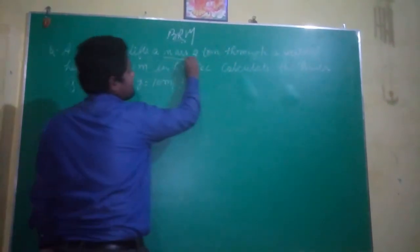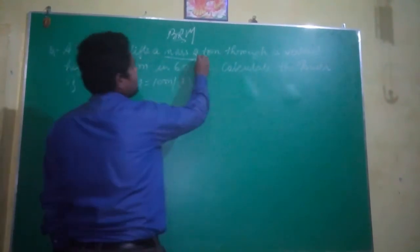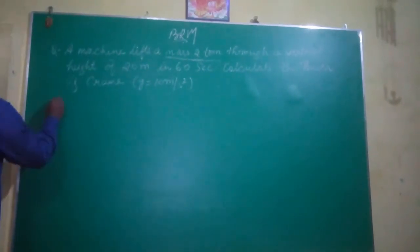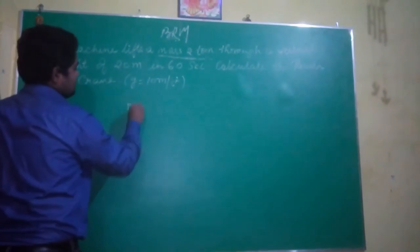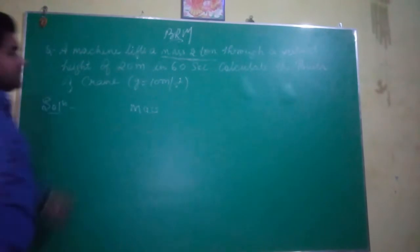A mass is lifted. The mass of the object is given as 2 tons. So first of all we will write the given things. The mass that the machine is lifting is 2 tons.